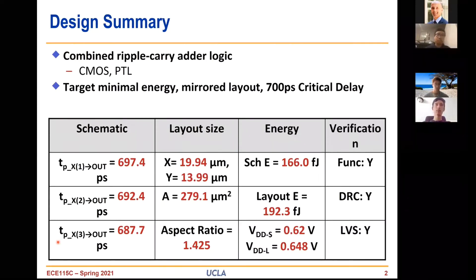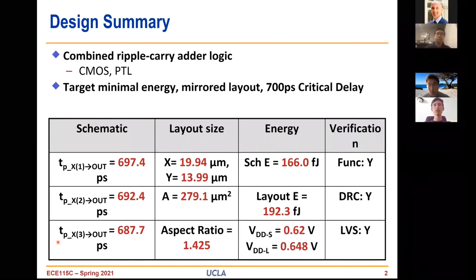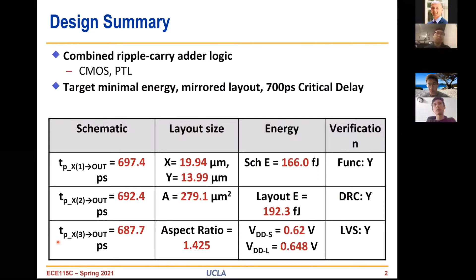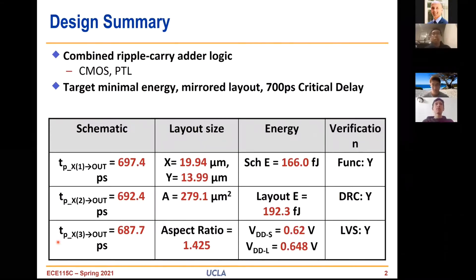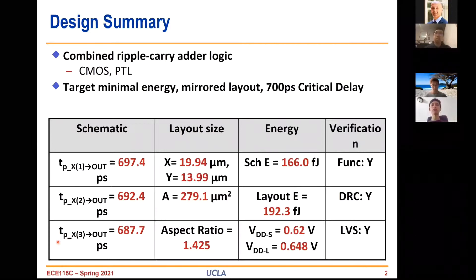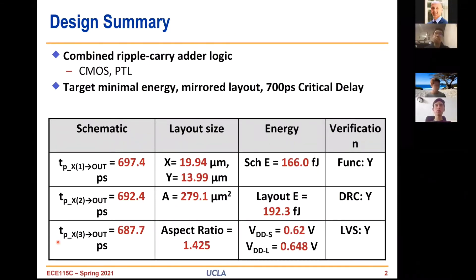Here are our three worst-case delays, with 697 picoseconds being the worst. For our layout size, we were able to get an area of 279.1 micrometers squared, with an aspect ratio of 1.425. For our schematic energy we have 166 femtojoules, and for layout we have 192.3 femtojoules. For our schematic VDD we used 0.62, and for our layout we have 0.648. We were able to pass all verification including functional, DRC, and LVS.